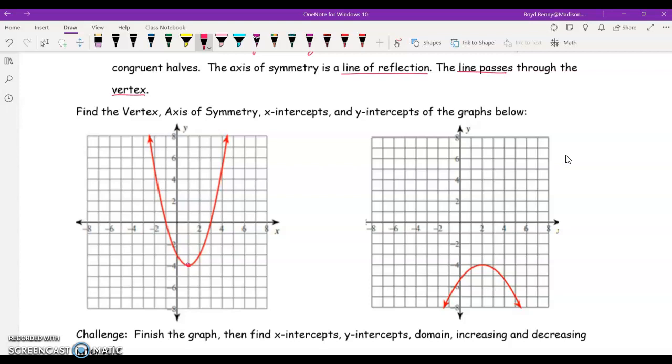So, the vertex would be right here. Let me grab a different colored pen. Vertex would be right here. That is the lowest point on the graph. And that is the point 1 comma negative 4. So, our vertex is at 1 comma negative 4.